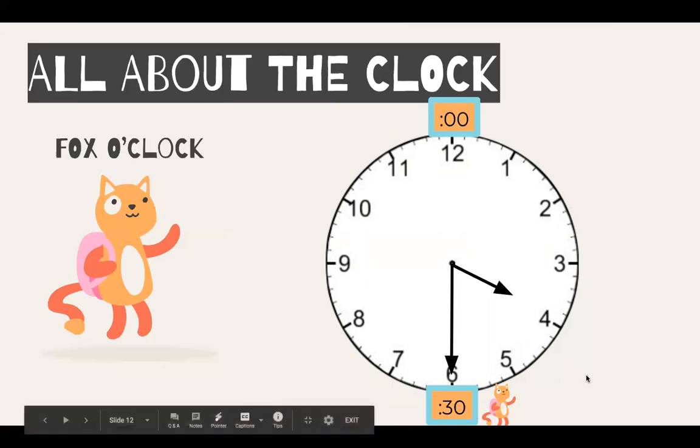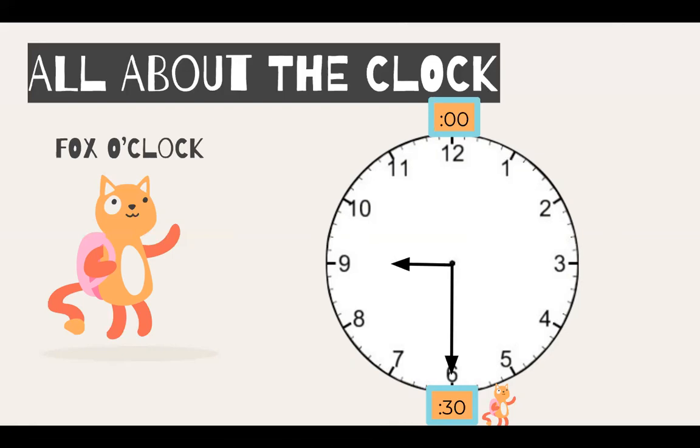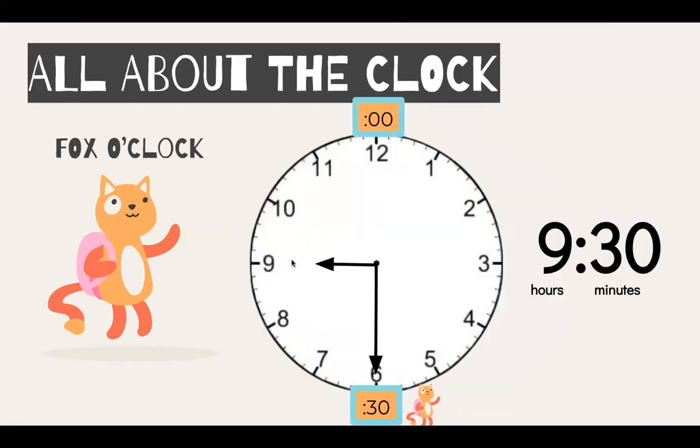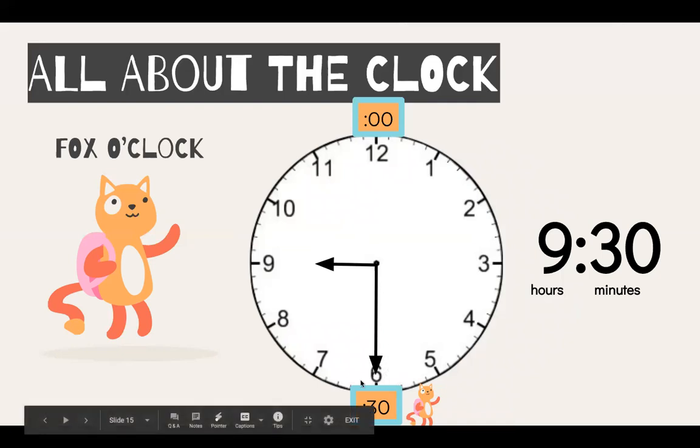So I want you to watch the hour hand again to see what time it is. Where is the hour hand? Our hour hand is pointed at the nine and our minute hand is pointed at 30, for 9:30.